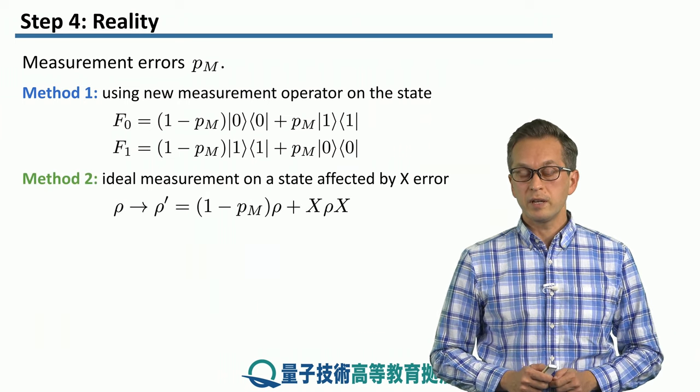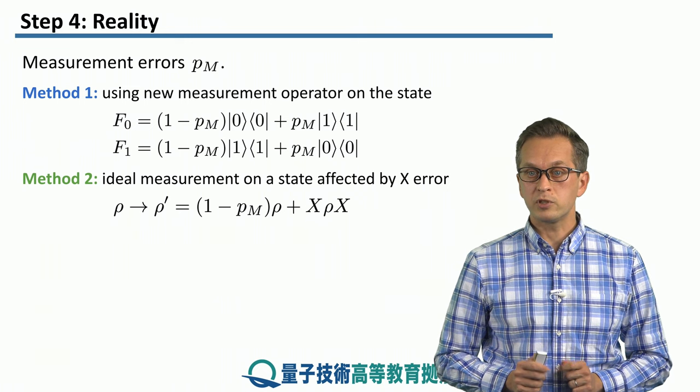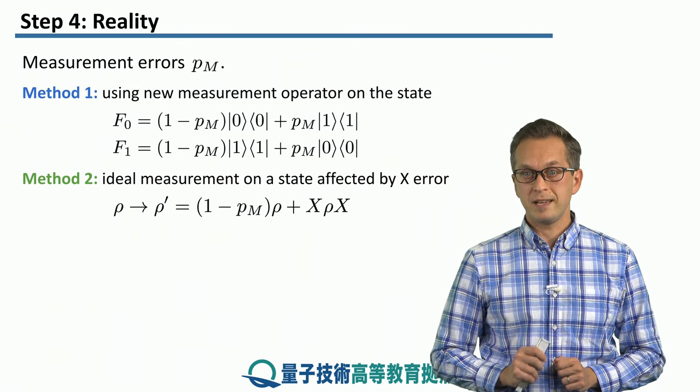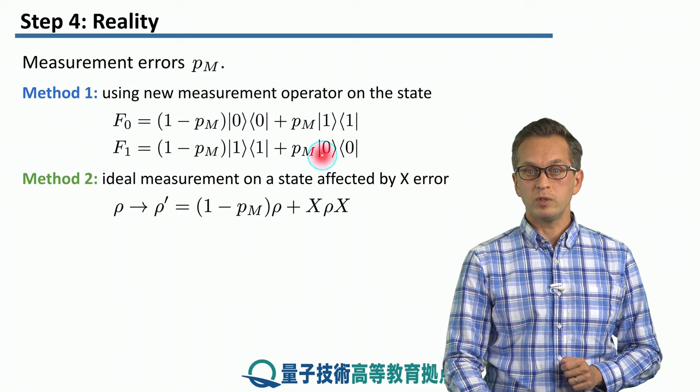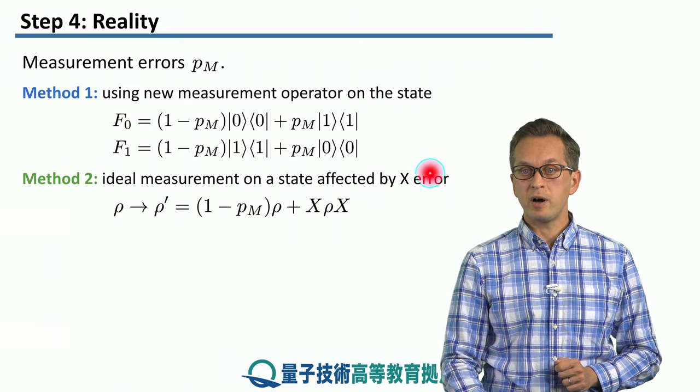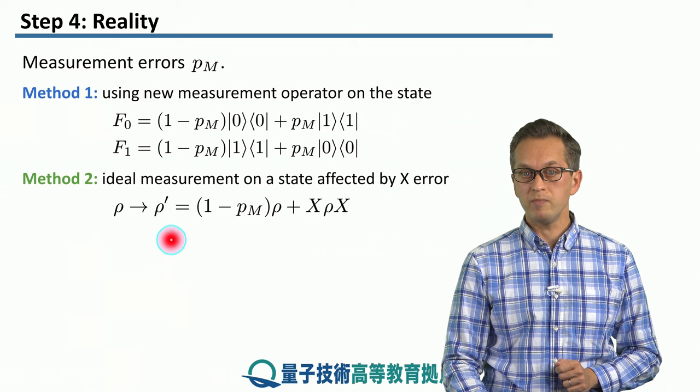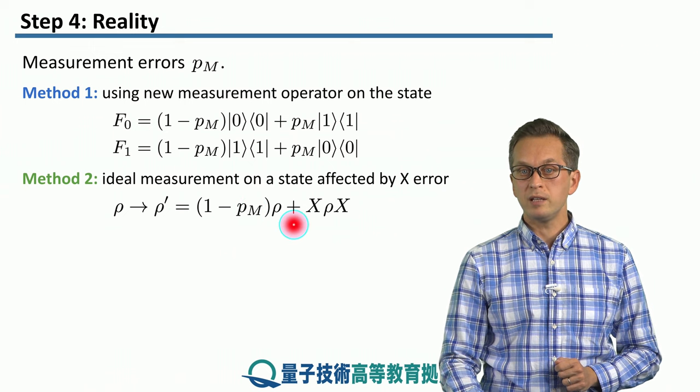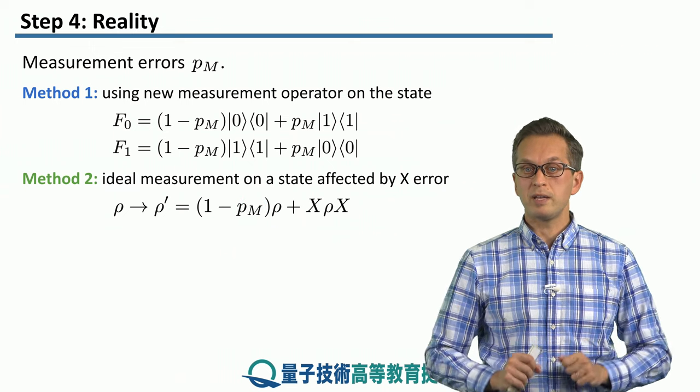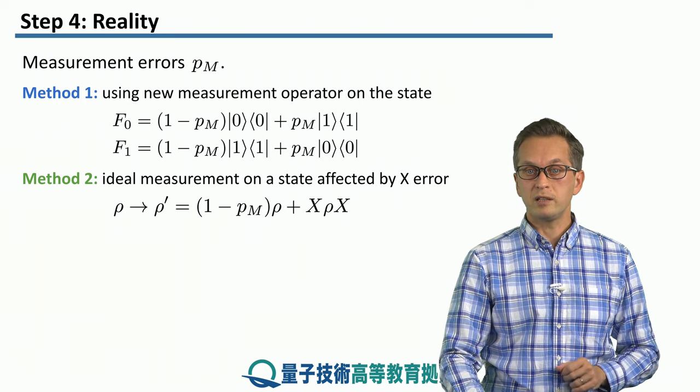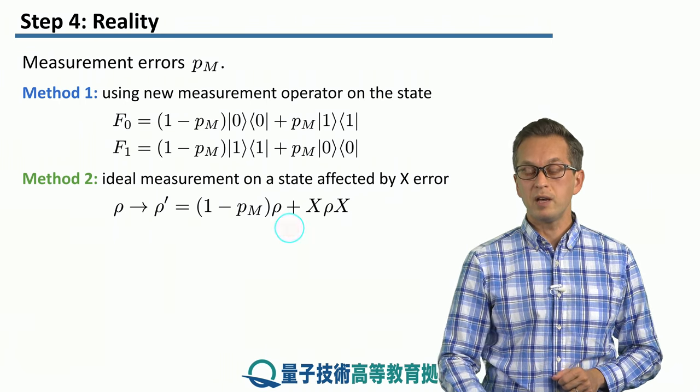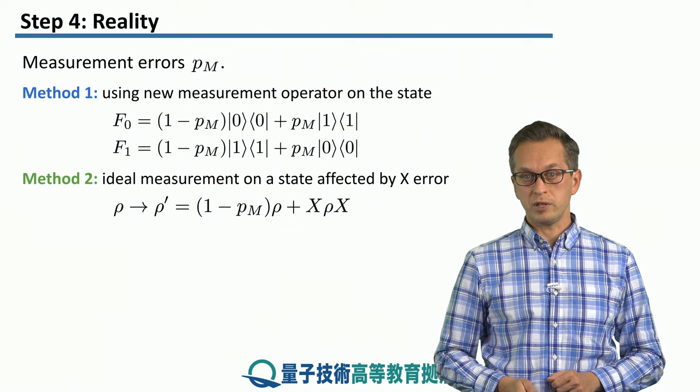The other method is that our projectors are ideal, but our state is not. What we can do is we can apply the Pauli X channel to our state to obtain a new state rho prime. And the probability that we apply the X flip is PM, while the probability that we leave the state untouched is 1 minus PM. And then we measure with ideal projectors.